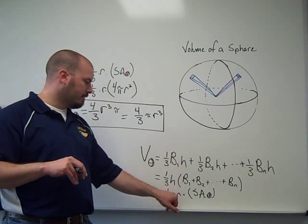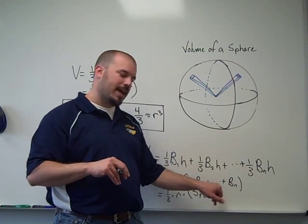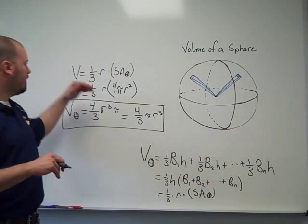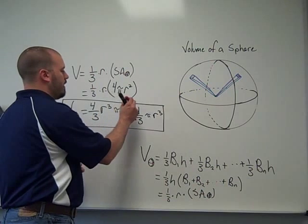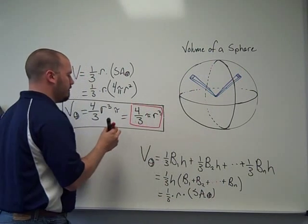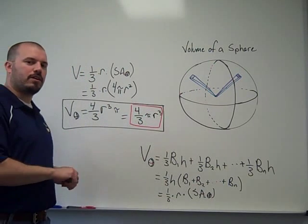Remember, the height of the pyramid is the radius. All those bases add up to the total surface. Use a little bit more algebra to simplify that overall formula for volume of a sphere. Four-thirds pi r cubed.